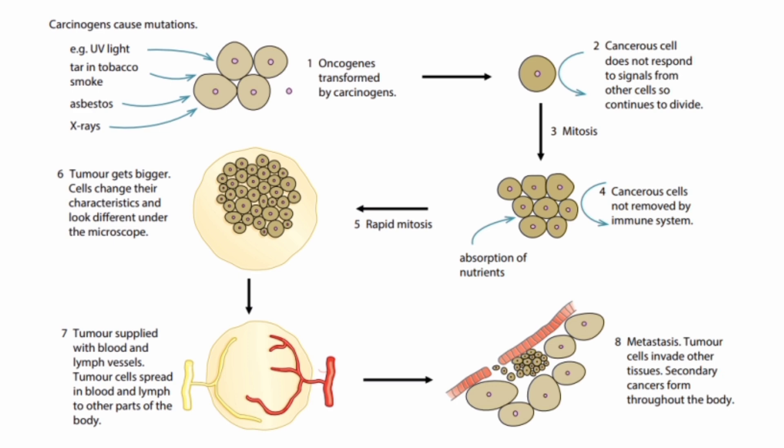Number three: mitosis. Cancerous cells undergo rapid mitosis — dividing from 2 to 4, 4 to 8, and so on. This rapid division also means the cells absorb large amounts of nutrients, which is why nutrient absorption becomes a major issue in cancerous cells.